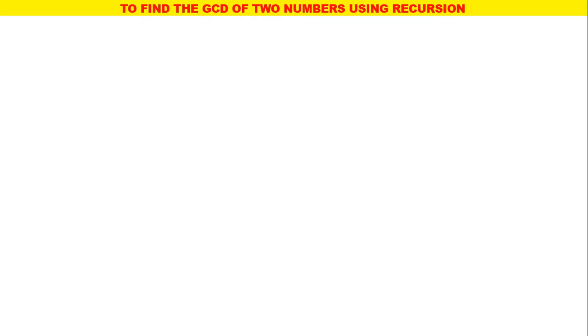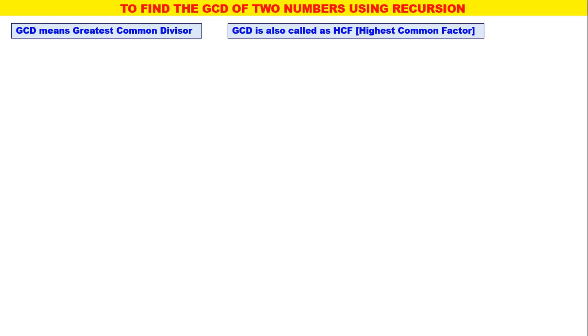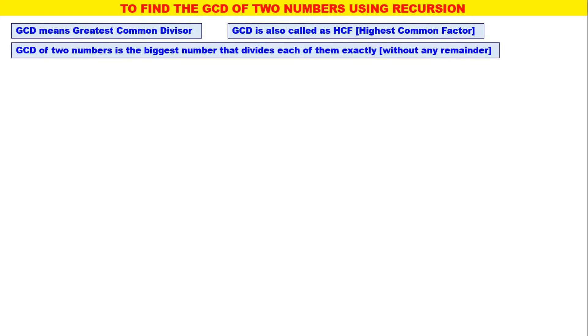My dear students, in this video we will understand how to find GCD of two numbers using recursion. GCD means greatest common divisor. GCD is also called as HCF, highest common factor. GCD of two numbers is the biggest number that divides each of those two numbers exactly without any remainder.